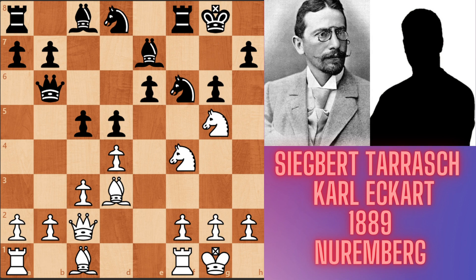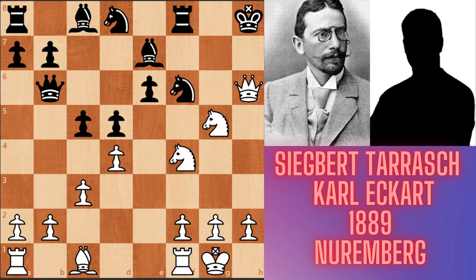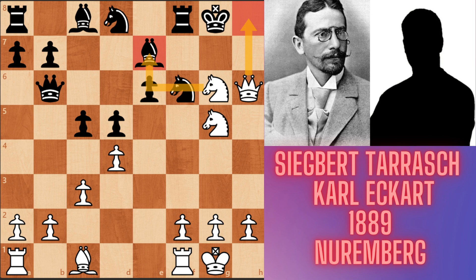White had a sacrifice in this position: Tarrasch played Bishop takes g6 — a great move and sacrifice! Now if Black didn't accept the sacrifice, Black's position collapsed. So Black played h takes g6. After hxg6, Queen takes g6 — checking. The King has to go to h8. Queen h6 — checking again. The King has to go to g8.